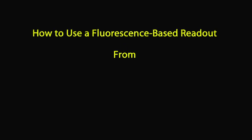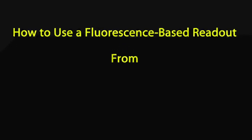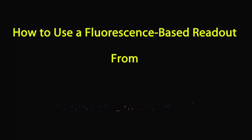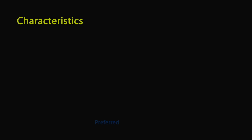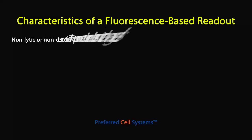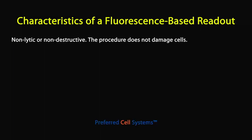This tutorial describes how to perform any fluorescence-based assay from Preferred Cell Systems. All assays that incorporate a fluorescence readout or endpoint are non-lytic or non-destructive. This means that the cells are not damaged during the procedure, and other downstream readouts such as flow cytometry and other fluorescent readouts can be used on the same cells.